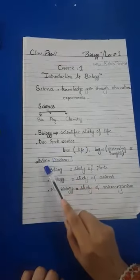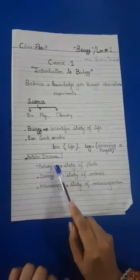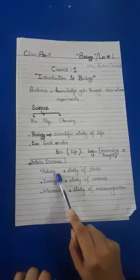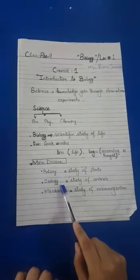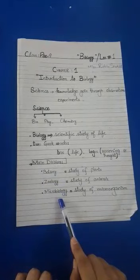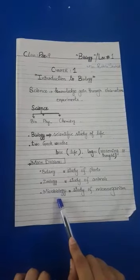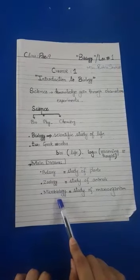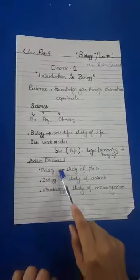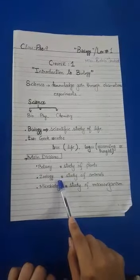Biology is divided into main divisions. There are three main divisions of biology: Botany, the study of plants; Zoology, the study of animals; and Microbiology, the study of microorganisms. Whenever students ask about the main divisions of biology, you will explain only these three divisions and not mix them with branches.